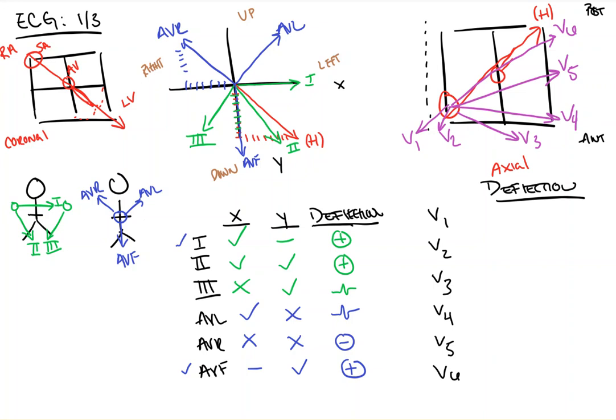So, V5 and V6 look like they're going in the same direction as that of the heart, roughly, so they're both positive. V3 and V4, both perpendicular, therefore isoelectric. And V1 and V2 are both negative, as they're going in the opposite direction of the vector of the heart.